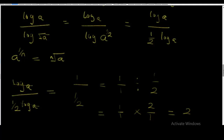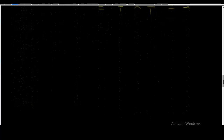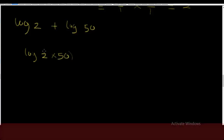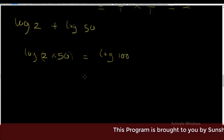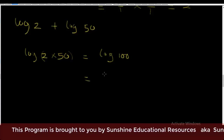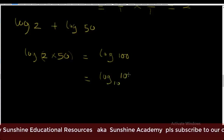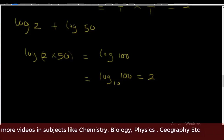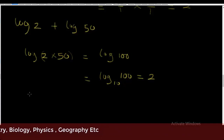Example 2: still simplify without using tables — log 2 plus log 50. Using the law of logarithm, this is the same as writing log (2 × 50) = log 100. We are dealing with log base 10 here. Log base 10 of 100 is equal to 2, because 100 is the same as 10 raised to the power 2. So the answer is 2.